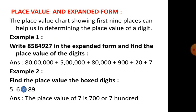Next is expanded form. Expanded form means writing down numbers by breaking them apart. For example, the number given here is 85 lakhs 84 thousand 927. We have to write it in expanded form.